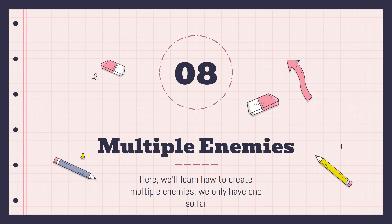Hello YouTube, welcome to video number eight in our introduction to game development using the Python pygame module library. In this tutorial, we're going to learn how to add multiple enemies into our game. Right now we just have a single enemy, and whenever we shoot it, the enemy simply respawns in a new location. We want to keep five different alien crafts moving on the screen at the same time.